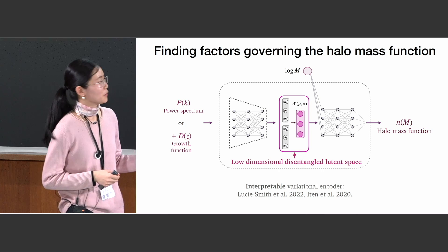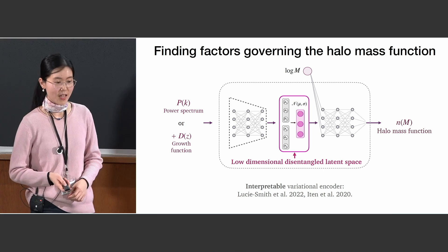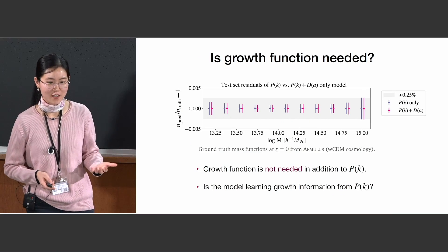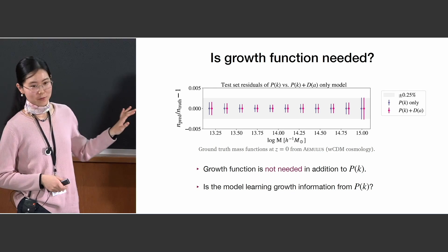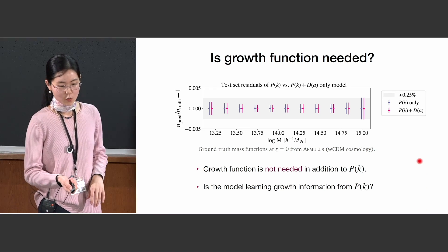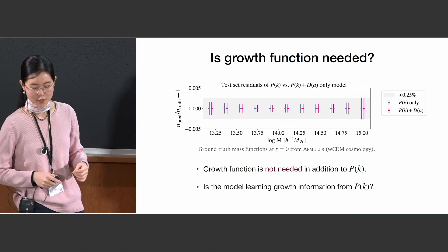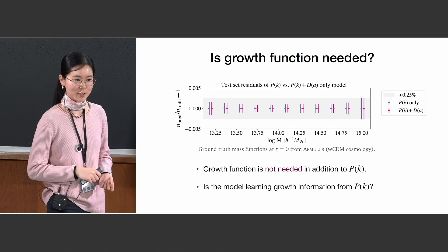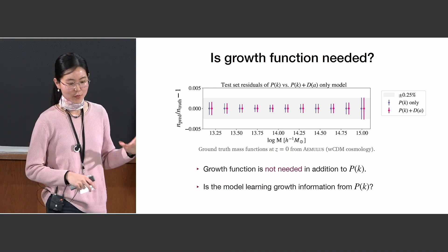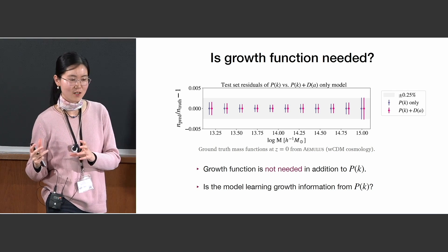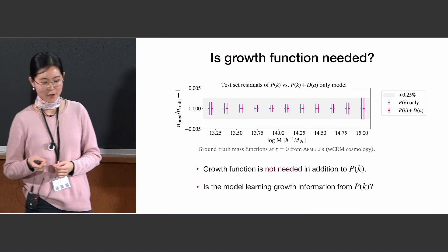Using this model, we first asked whether we need the growth function to predict the halo mass function. To our surprise, we find that to predict the halo mass function at redshift zero, we just need the power spectrum. Providing the model additionally with the growth function does not actually improve prediction accuracy. This may seem to contradict existing literature, but the literature shows that growth adds information to sigma, while sigma does not capture all of the information in the power spectrum. So our model may still be learning growth-related information, but doing so from the power spectrum.